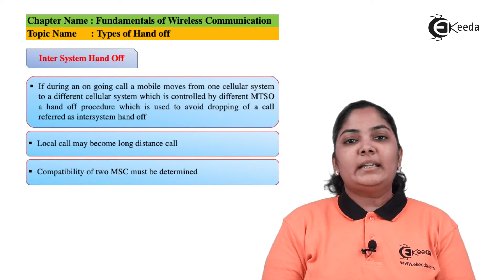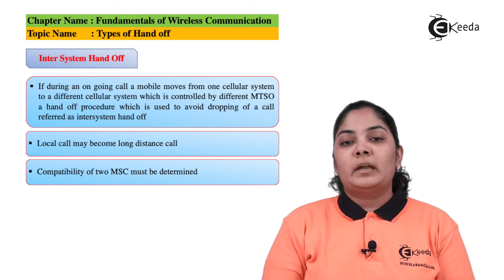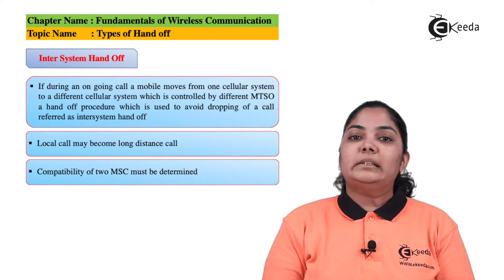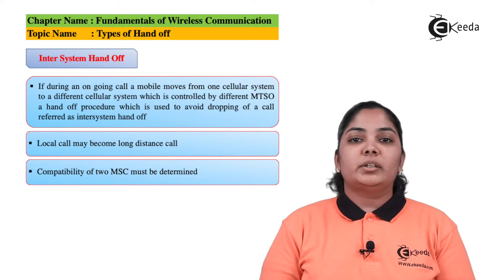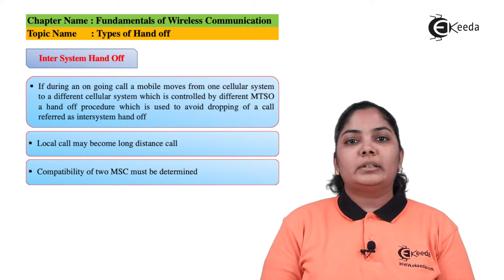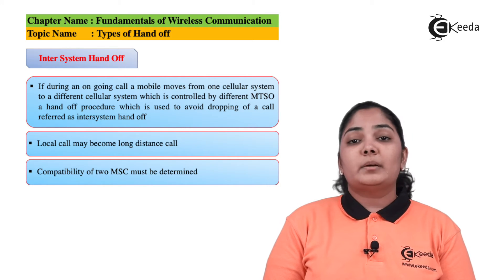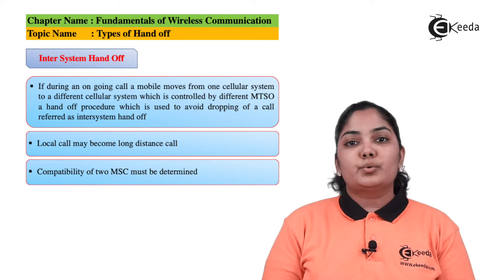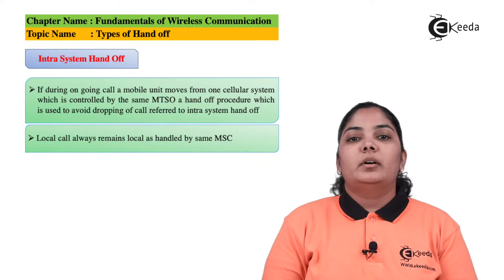The next type is inter-system handoff. In inter-system handoff, if a mobile is moving from one cell to another cell served by a different MSC, the handoff is known as inter-system handoff. Since the destination cell is supported by a different MSC, it is not certain that a local call will remain local — it might become a long distance call and the user becomes a roamer. Compatibility between the two MSCs or MTSOs must be considered while making such a handoff.